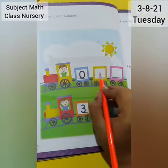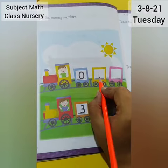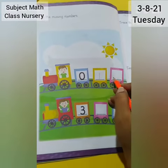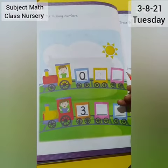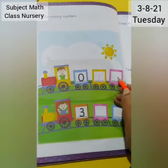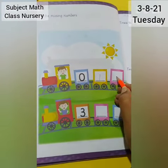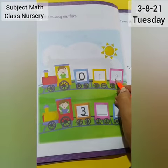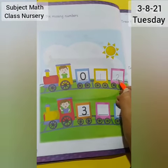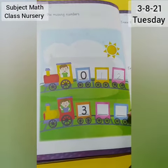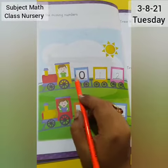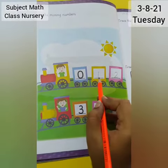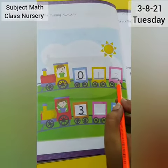0, 1. And then what comes here? Here comes the number 2. Write number 2. Now read it: 0, 1, 2.